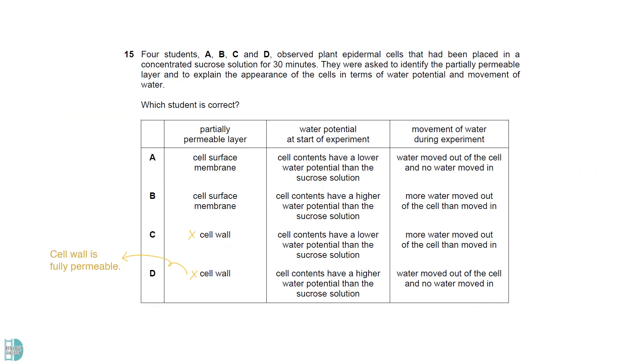A cell wall is fully permeable, so C and D are both wrong. If the cell contents have a lower water potential, water should move in by osmosis. So A is incorrect too.